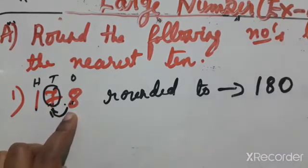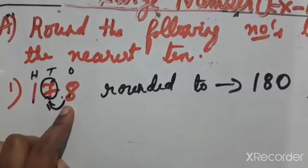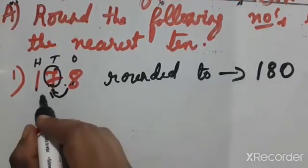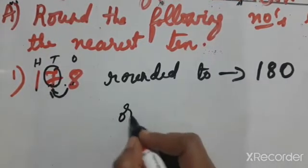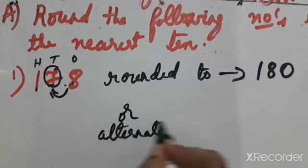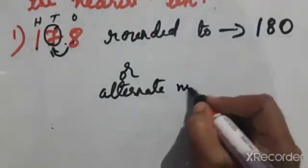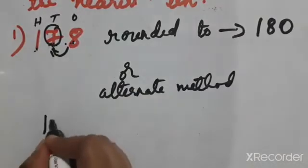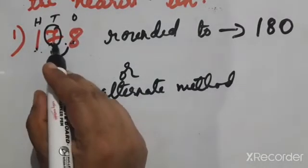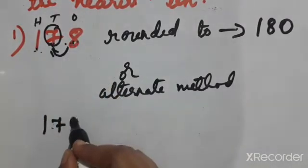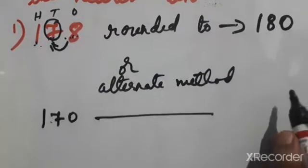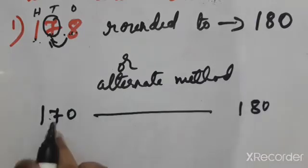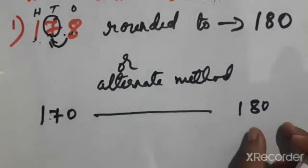Because once the door is knocked, that person will become zero. This is the alternate method. In the alternate method, we look at numbers between 170 and 180. Tens place means we look at the range 170 to 180, and the difference between them is ten.